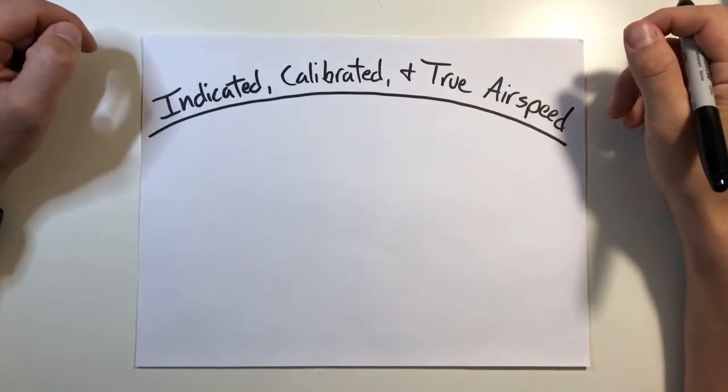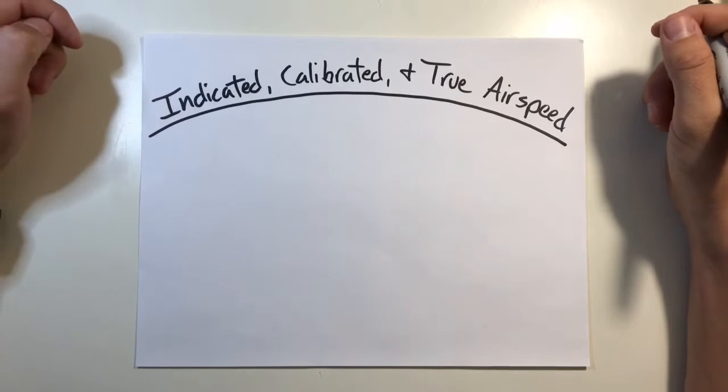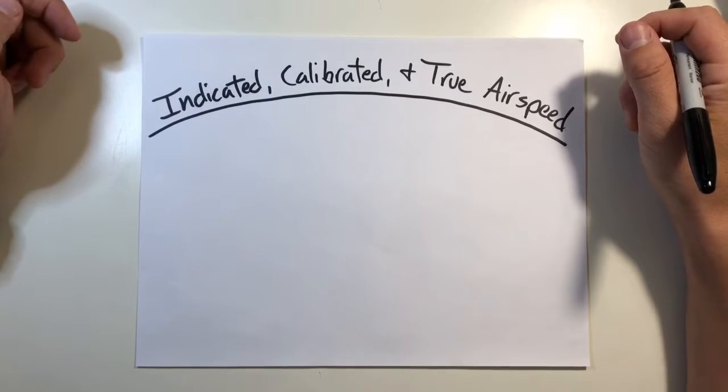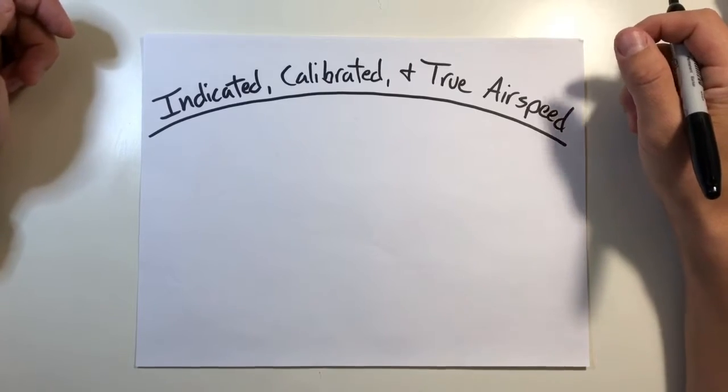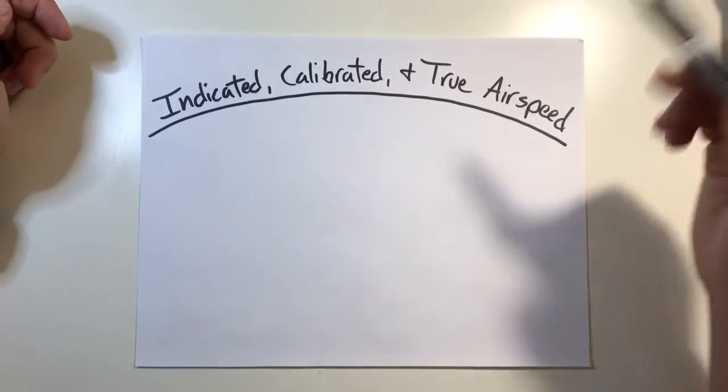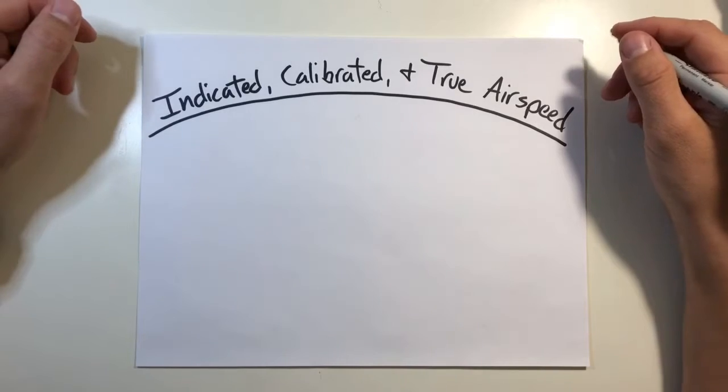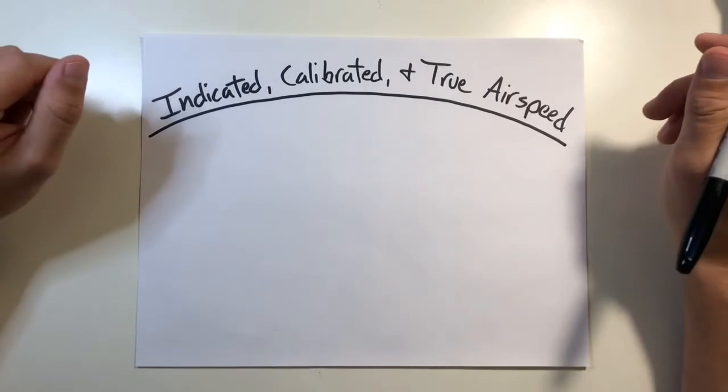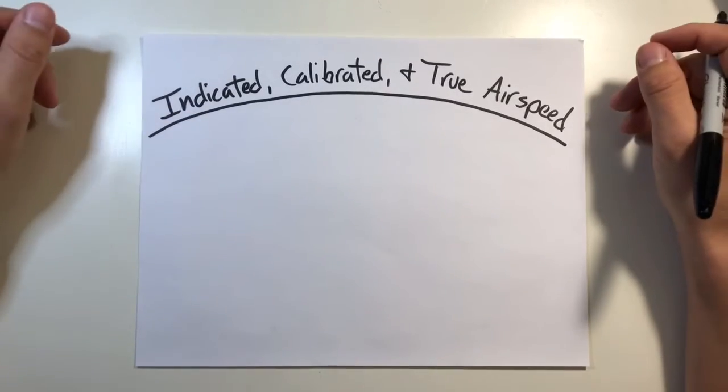Welcome back to Helicopter Lessons in 10 Minutes or Less. I'm Jacob, and this video's topic covers the different methods we have for measuring how fast an aircraft travels through the air. The most common terms that pilots use today are indicated, calibrated, and true airspeed. In this video, I'll break down each one and hopefully help alleviate any confusion between them and help to set a basis for where they come from. So let's get started.